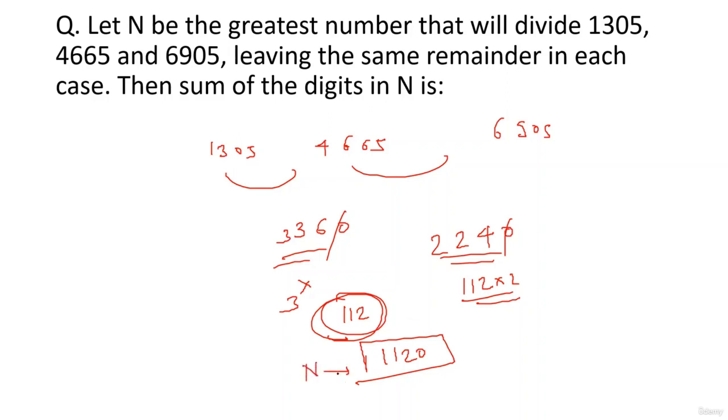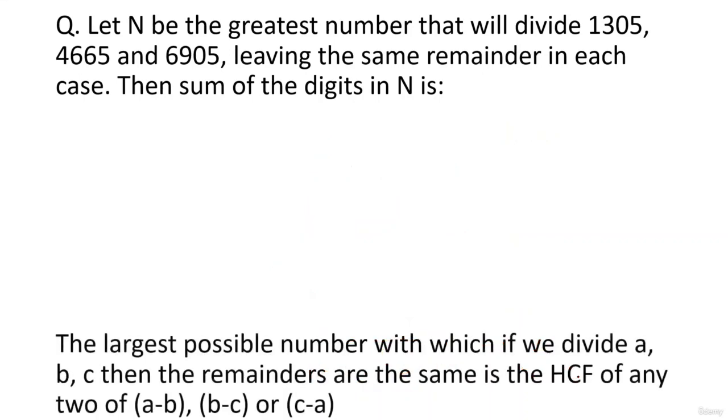They're asking you the sum of the digits in N. We have found out the value of N. N is the greatest number that divides all these three with the same remainder. It is 1120. Sum of the digits will be 1 plus 1 plus 2 plus 0, which is 4. This is your HCF model two. That is the largest possible number with which, if we divide A, B and C, then the remainders are same. It is the HCF of any two of the differences.